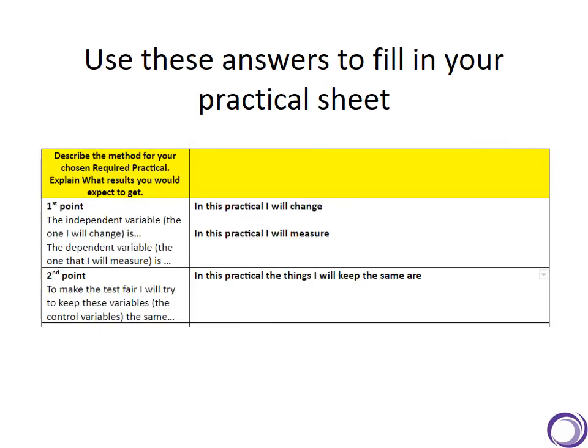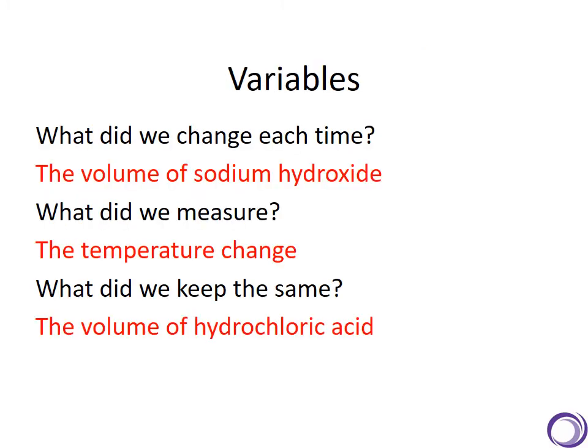Okay then, if you look at your Google Doc sheet now, you should see the beginning of this table, and it will say 'in this practical I will change' and 'in this practical I will measure.' The thing which you change is the independent variable. The thing that you measure is the dependent variable. And anything that you keep the same is a control variable.